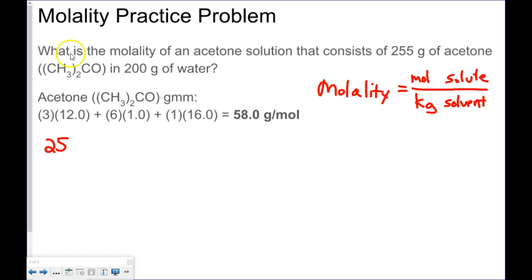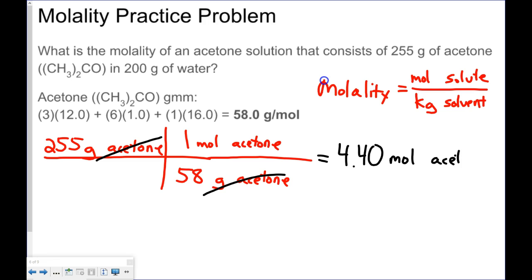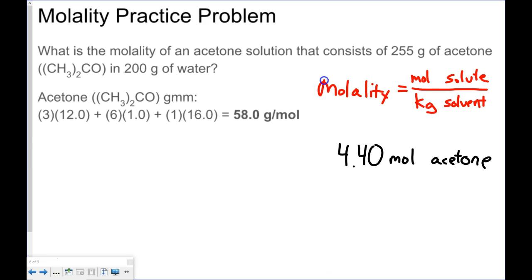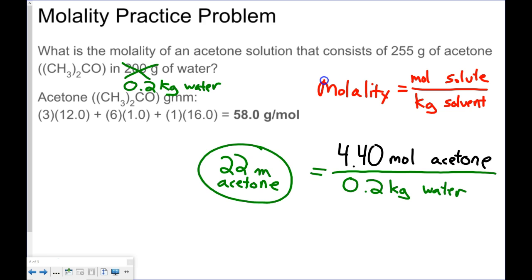Next, figuring out the molality of 255 grams of acetone and 200 grams of water. I convert 255 grams of acetone into moles using the gram molecular mass, giving 4.4 moles of acetone. Dividing by kilograms of solvent — 200 grams is 0.2 kilograms of water — gives 4.4 divided by 0.2, which works out to be a 22 molal solution of acetone.